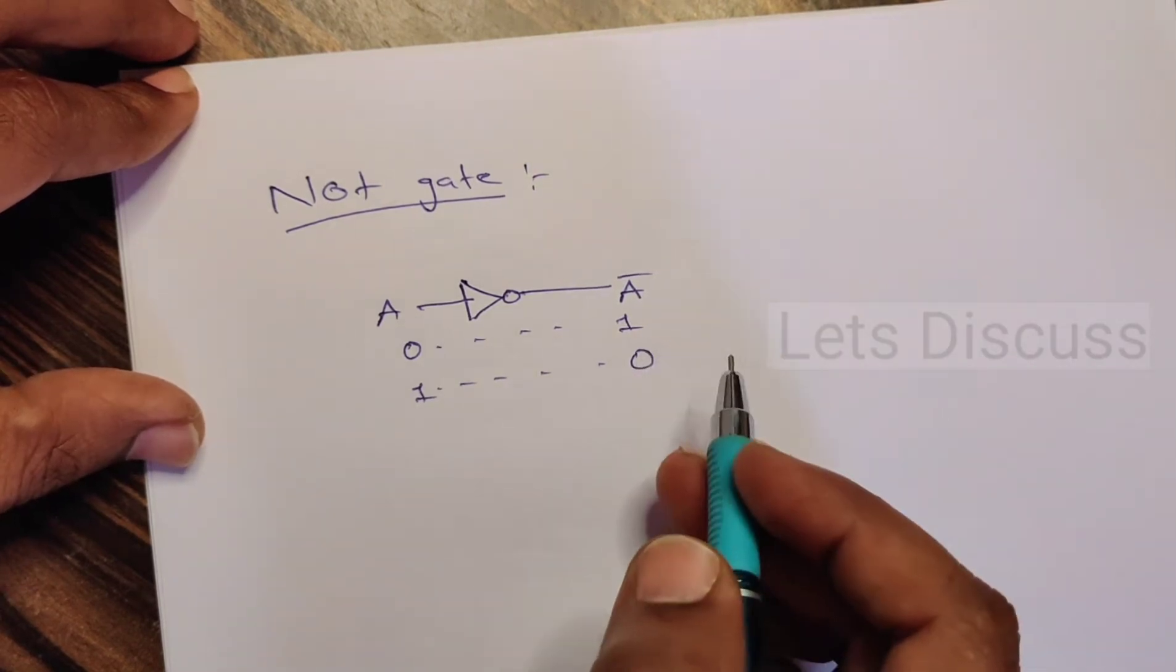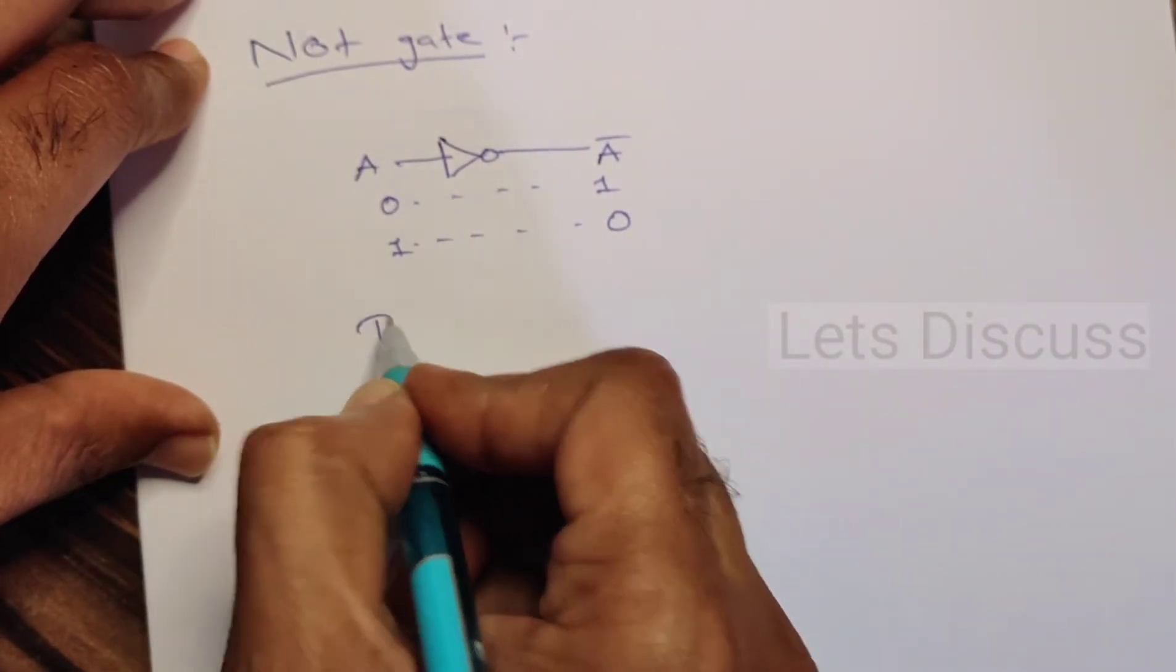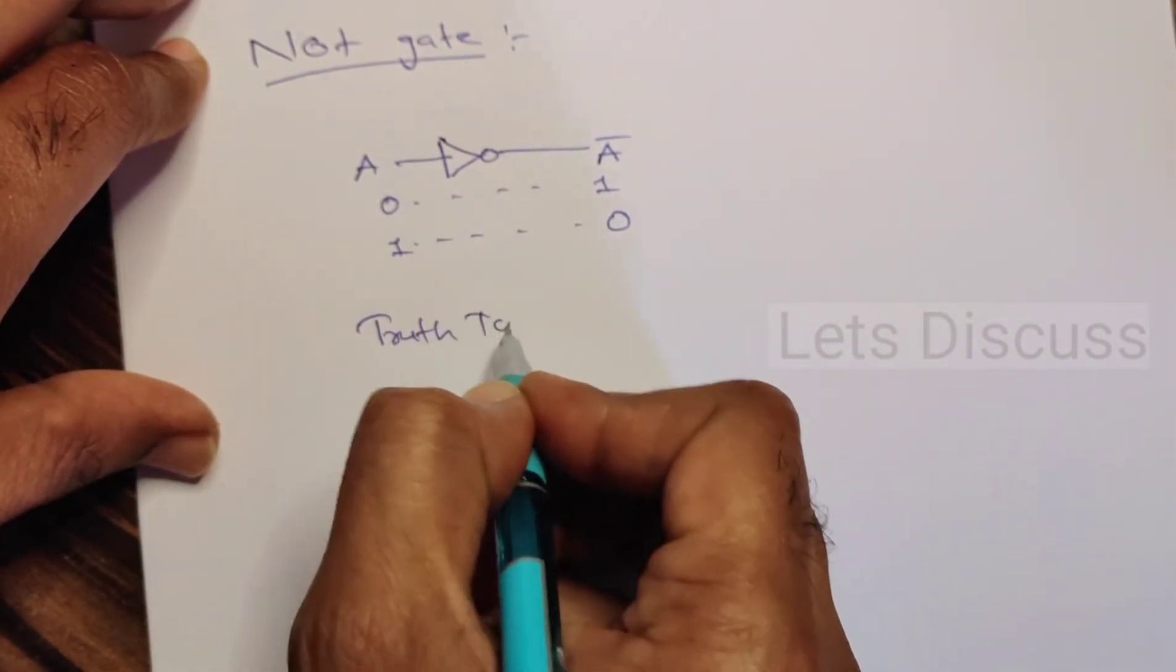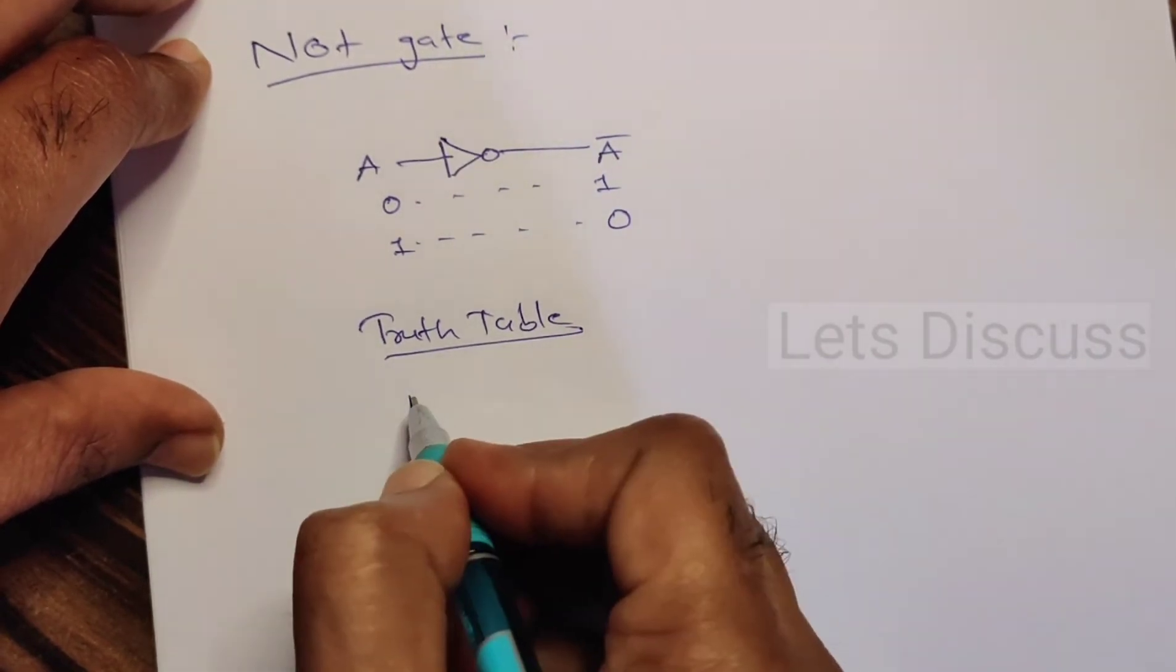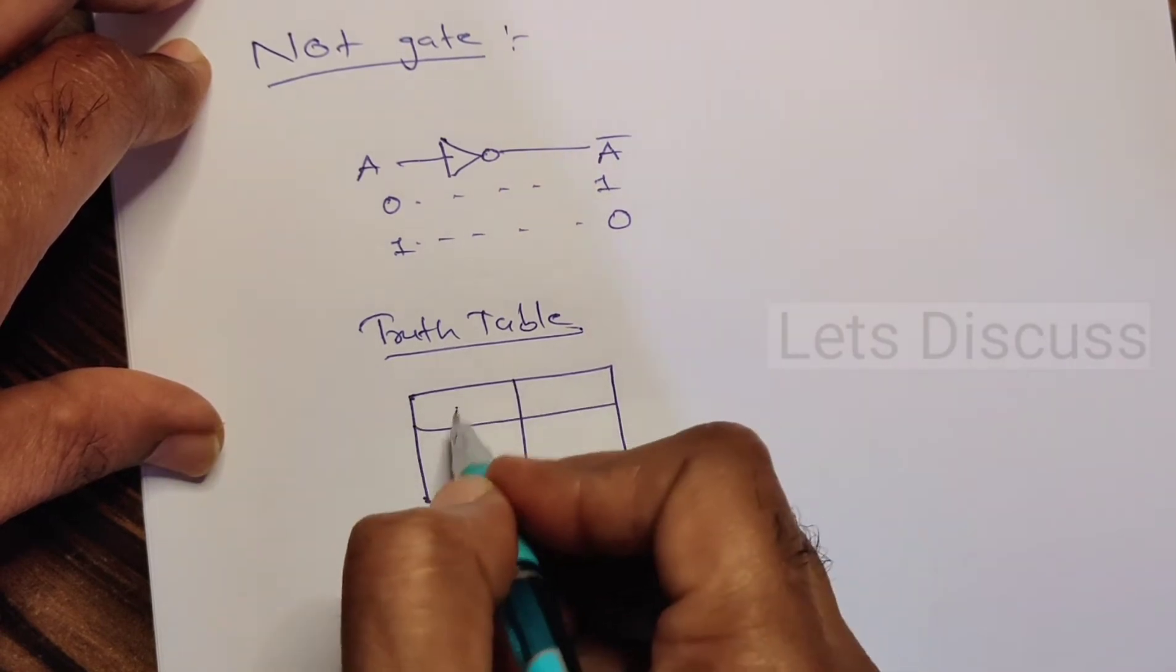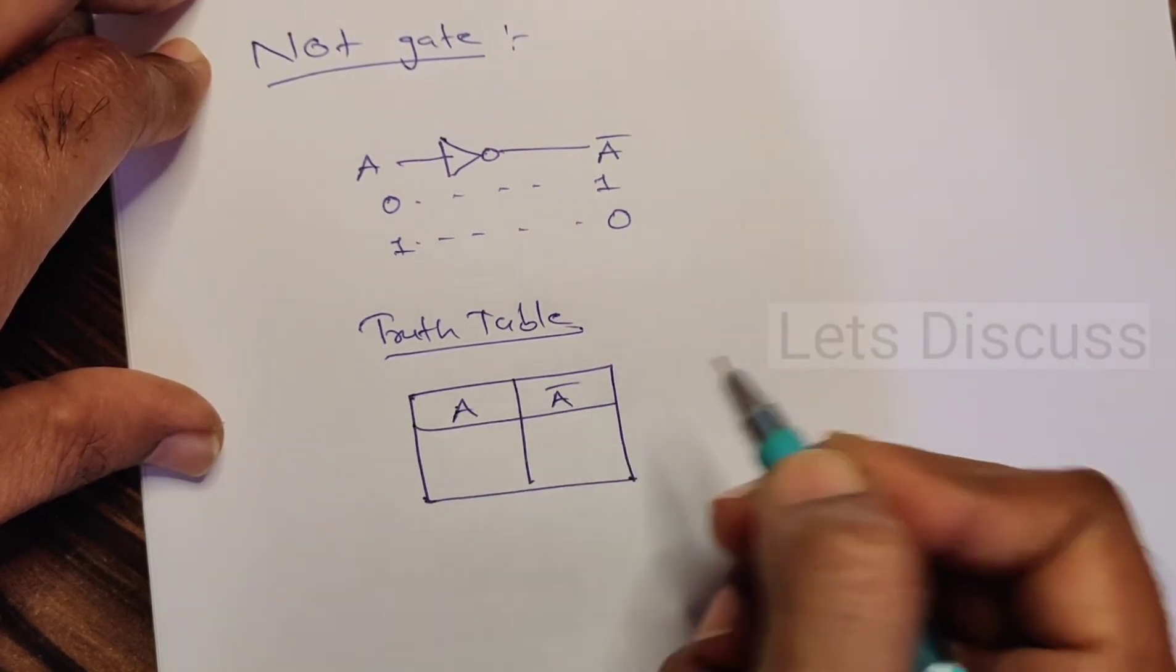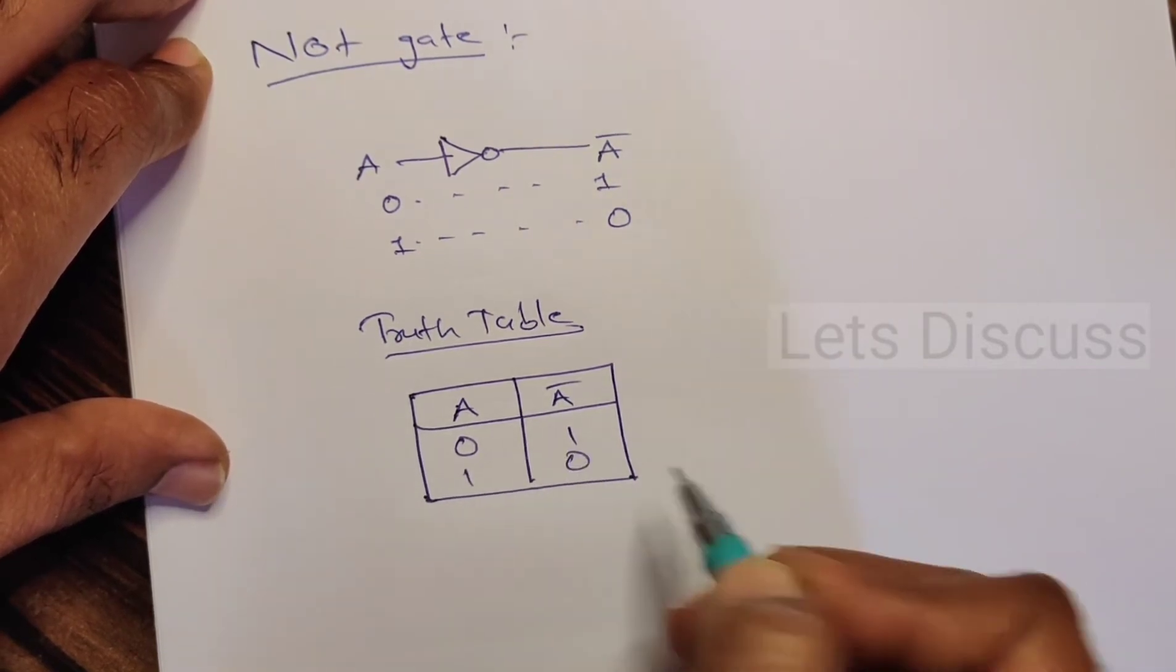Okay, now let's see the truth table. This is the truth table of NOT gate. Well, it has only one input and one output. When it is zero, it is one. When it is one, it is zero.